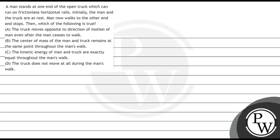Hello Bachu. Let's see this question. It says a man stands at one end of the open truck which can run on frictionless horizontal rails. Initially the man and the truck are at rest. Man now walks to the other end and stops. Then which of the following is true?